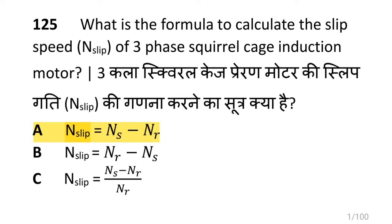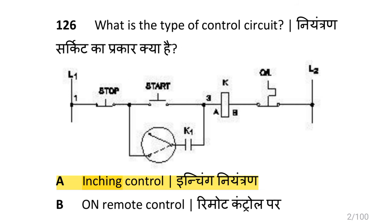We are going to see AC three phase motors. The formula to calculate slip speed of a three phase squirrel cage induction motor is: slip speed (N_slip) equals synchronous speed minus rotor speed.